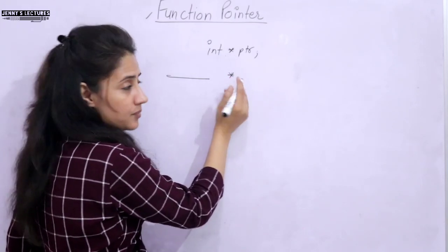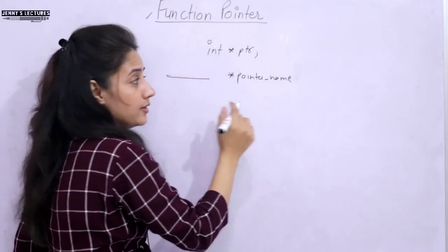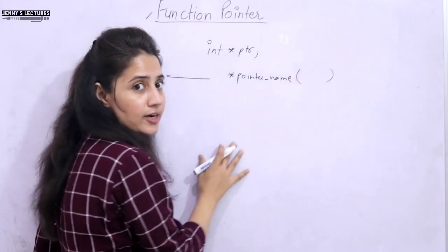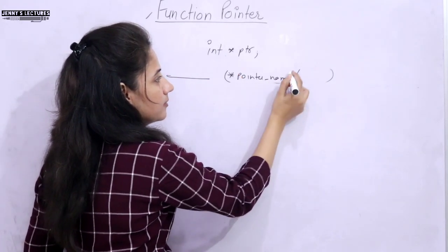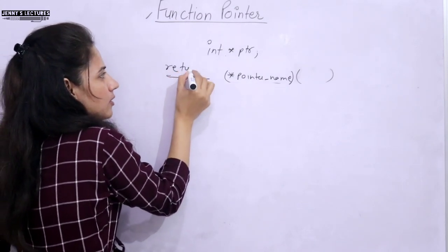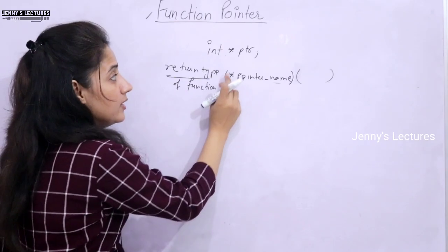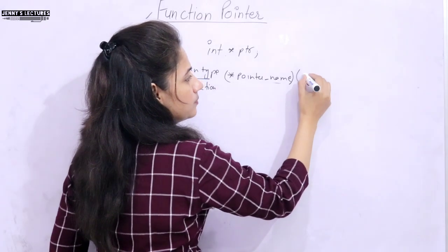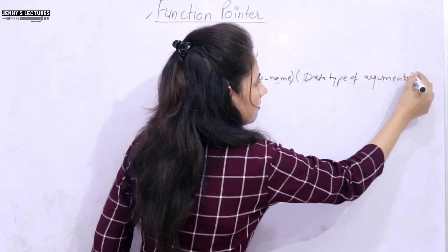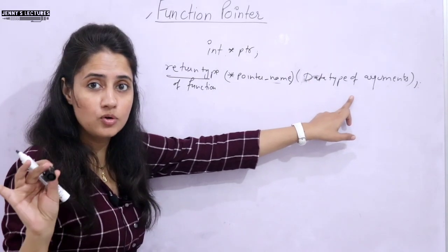Here we write the pointer name, and since it's a function pointer, a function may have some arguments or maybe it's blank. So here we also have to write something, and you have to put the pointer name part into brackets. What you write here: return type of the function — whatever the return type, exactly that type you write when you declare a pointer. Then in brackets you write asterisk and pointer name, and then in parentheses you write the data types of the arguments — how many arguments you want to pass. If you don't want to pass any argument, just leave it blank.